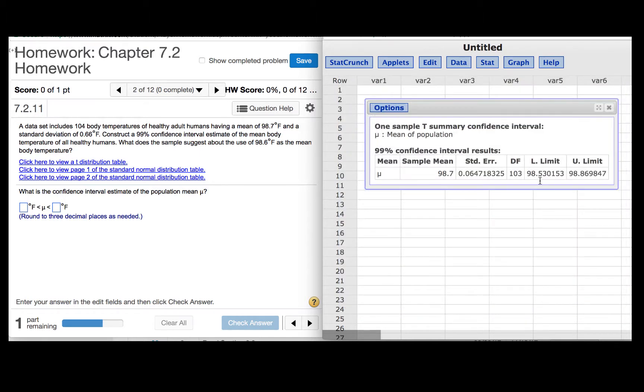We see that we have a lower limit of 98.530 and an upper limit of 98.870 when we round to three decimal places.